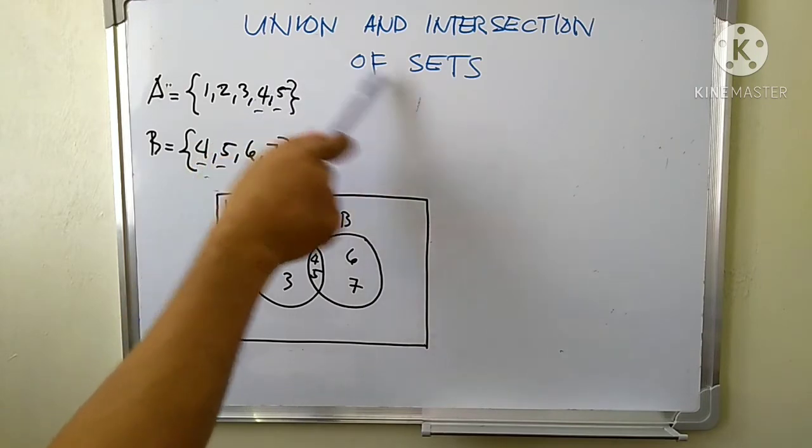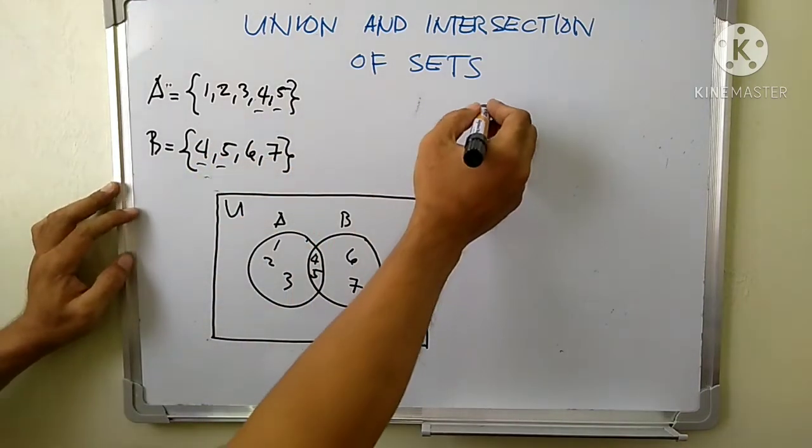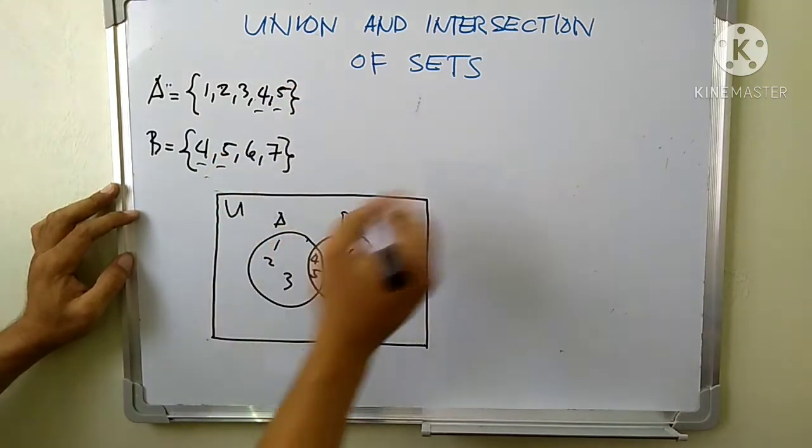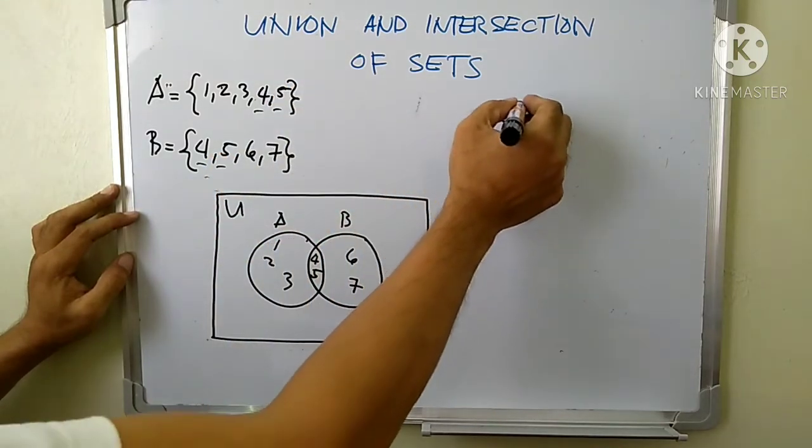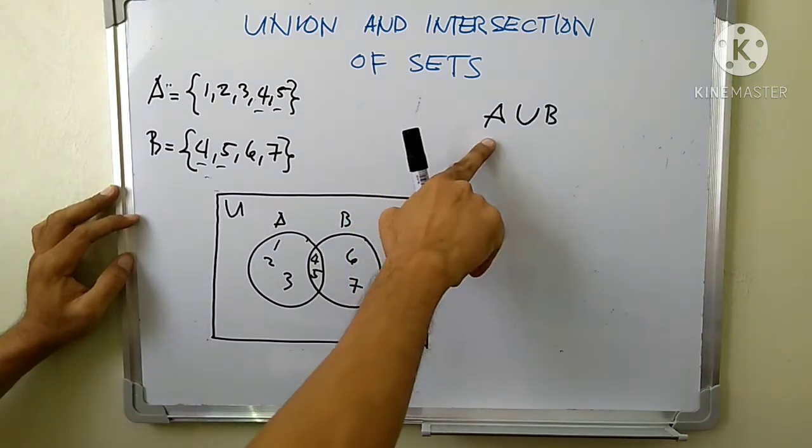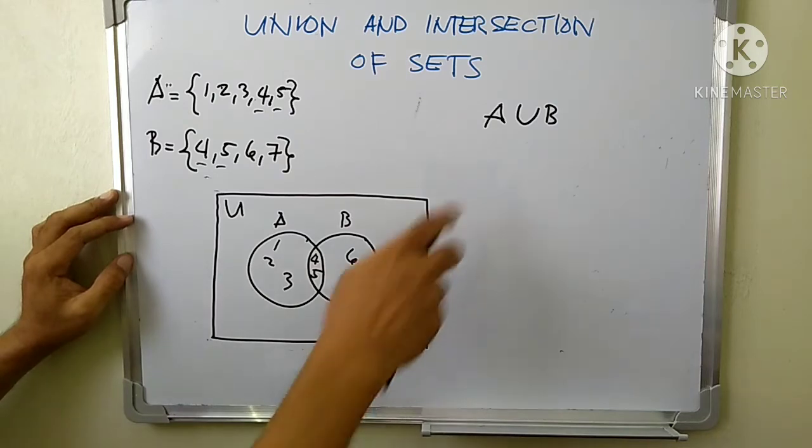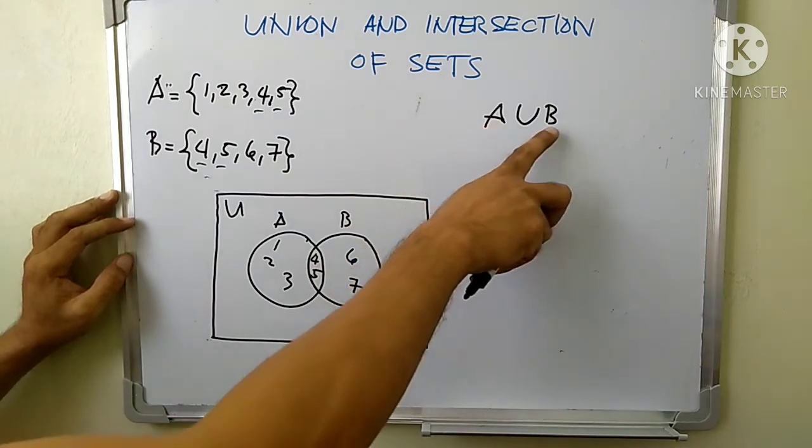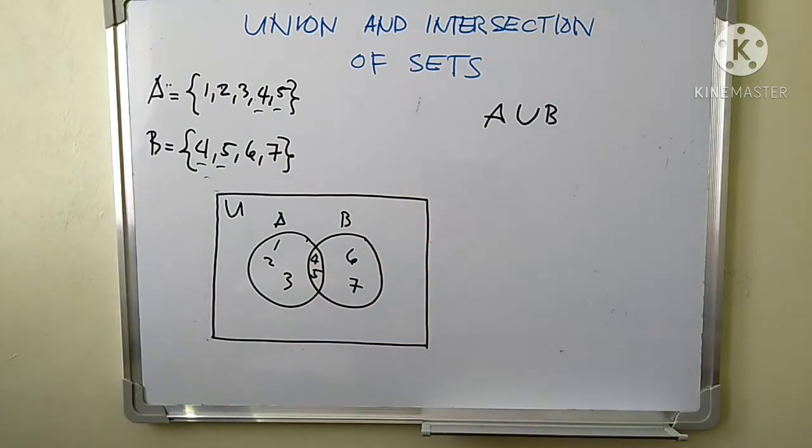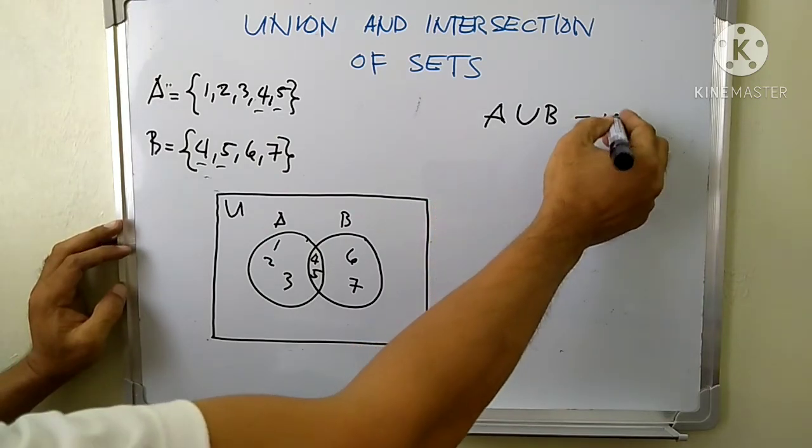Okay, now how do we get the union of sets? The symbol for the union of two sets is A∪B. Read this as A union B, or the union of set A and set B. So what is that union of set A and set B?